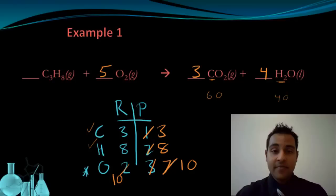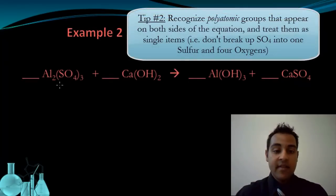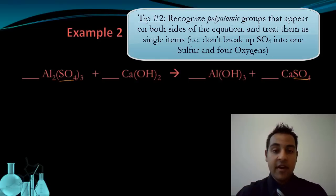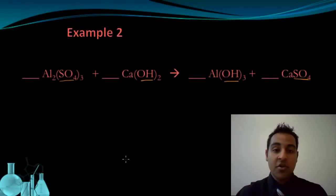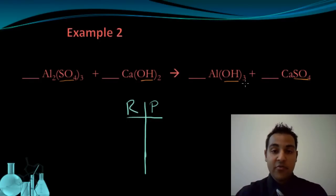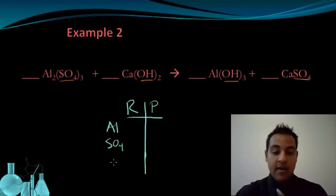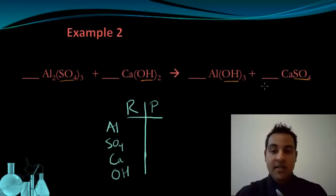Let's take a look at our next example. We're going to make use of our second tip: recognizing polyatomic groups as acting as a single unit. I have a polyatomic here — the sulfate ion — that also shows up on the other side, and I also have the hydroxide group, OH, which shows up on both sides. This means I'm not going to count the elements individually that are part of these polyatomic groups when I make my chart of atoms. The components that show up on both sides are aluminum, the sulfate ion, calcium, and hydroxide.